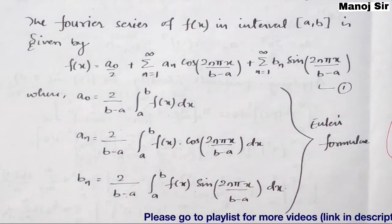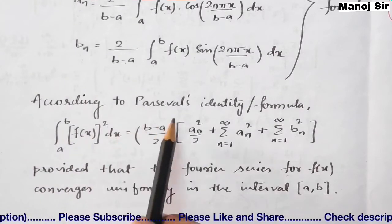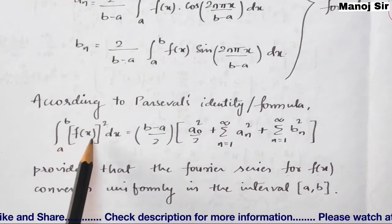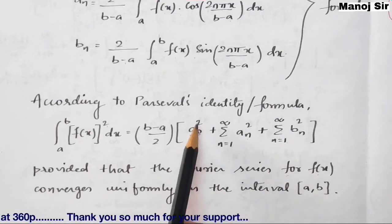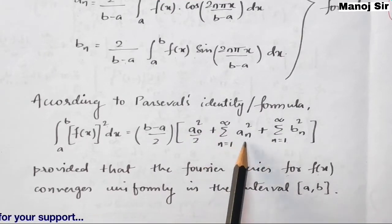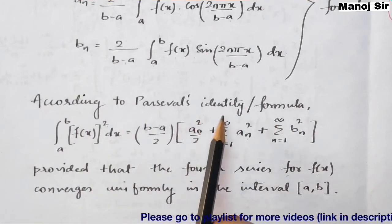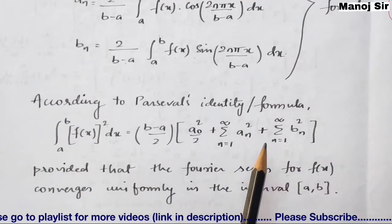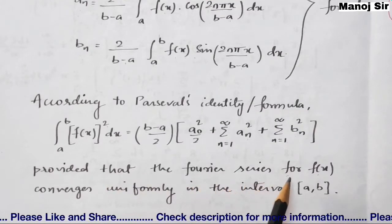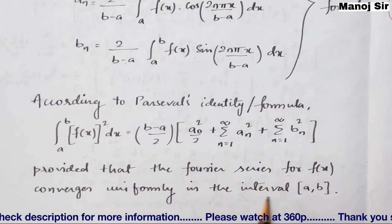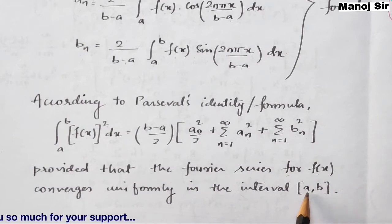Now the most important part: Parseval's identity states that the integral from a to b of [f(x)]² dx equals (b−a)/2 × [a₀²/2 + summation from n=1 to infinity of aₙ² + summation from n=1 to infinity of bₙ²]. We are going to prove this, provided that the Fourier series for f(x) converges uniformly in the interval (a, b).